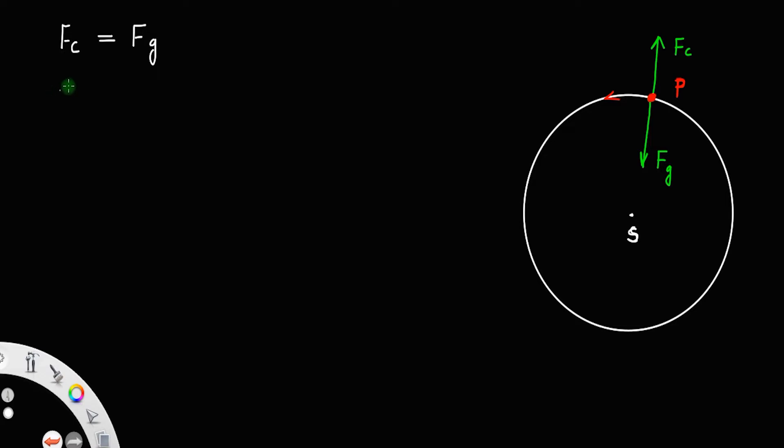If m is the mass of the planet, and r is the radius of the circle, or r is the distance of the planet from the sun, then r equals the radius.